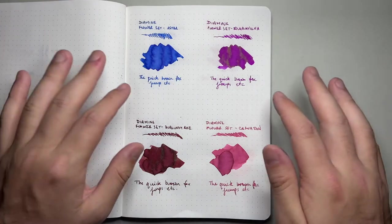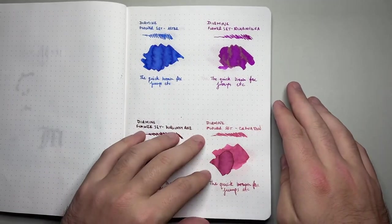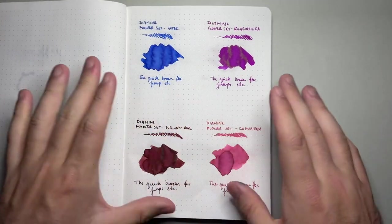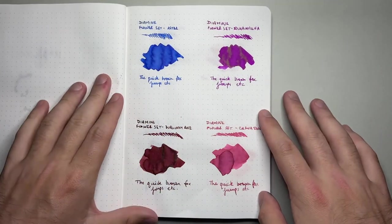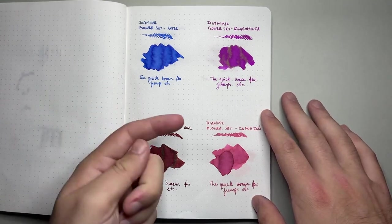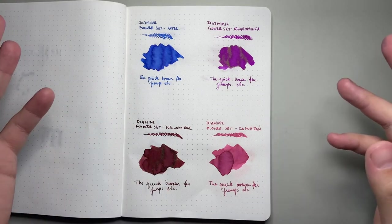So here we have the inks on Tomoe River paper. This is an Alaya Note notebook with 52g Tomoe River paper. Shows up the shading and the sheen nicely. I'll also put a color corrected image just over here when we get to each ink.